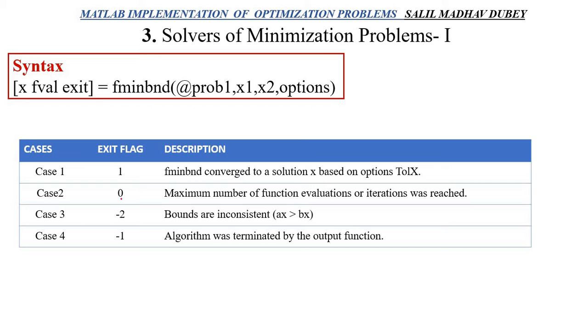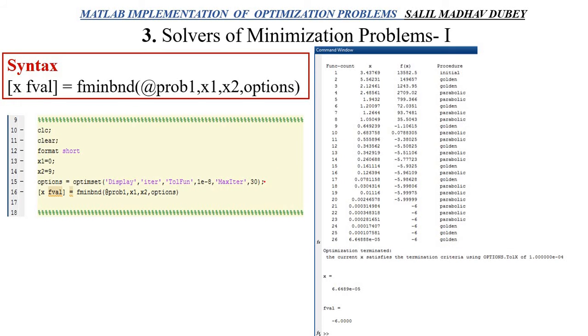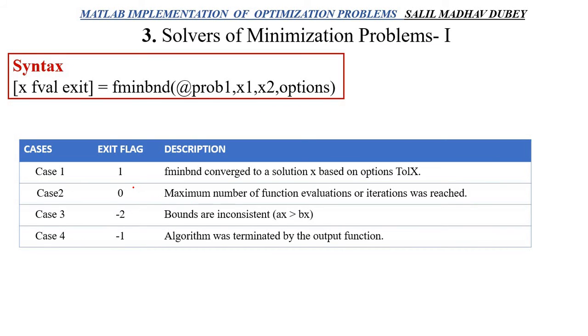Case 2: if exit value is zero, it means my maximum number of iterations or evaluations has been reached. What does it mean? I had given 30 here. Suppose I had given 20. Then it's possible my answer doesn't come at all. Then the exit value I would get would be zero, which shows that I need to increase the maximum number of iterations.